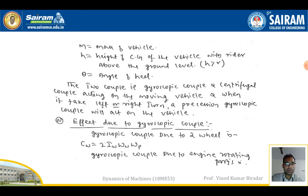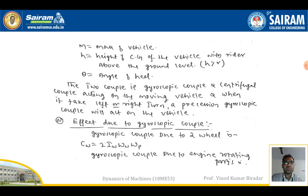Two couples will be generated on the moving vehicle: one is the gyroscope couple and the other is the centrifugal couple. When the vehicle takes a left or right turn, the precession gyroscope couple acts on the vehicle. Rigidity and precession are the properties of the gyroscope couple which affect the vehicle while turning. Case A: Effect due to the gyroscope couple. While turning the vehicle, two types of couple are generated - the gyroscope couple and the centrifugal couple.